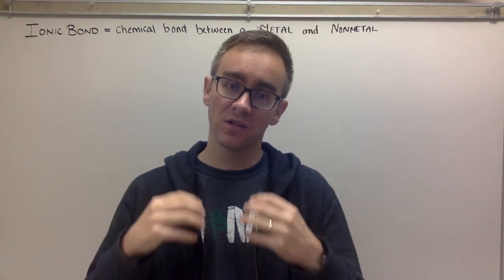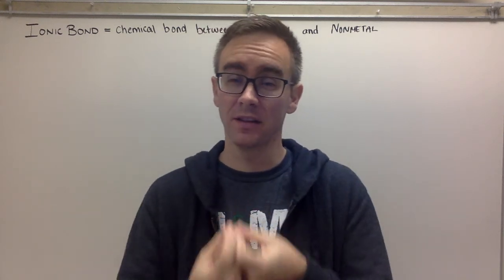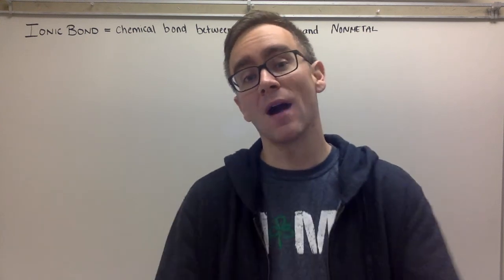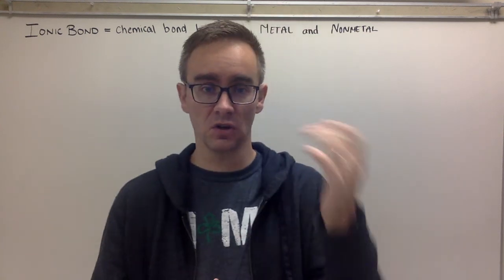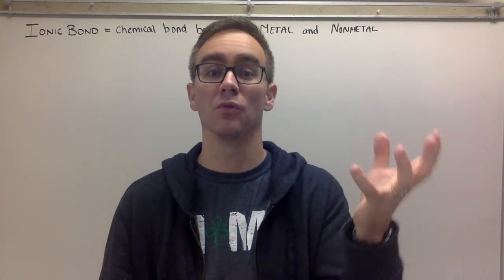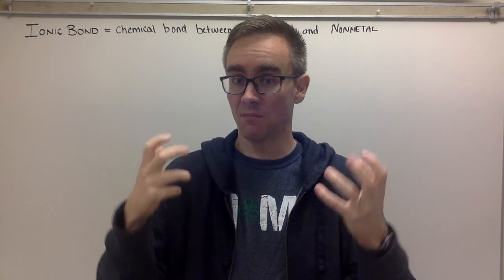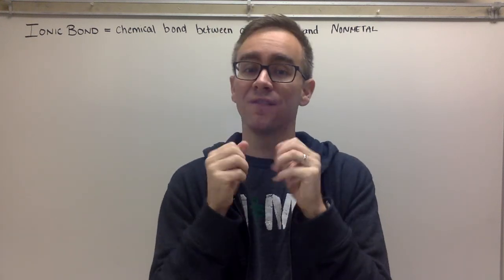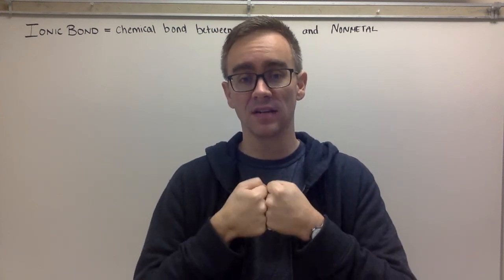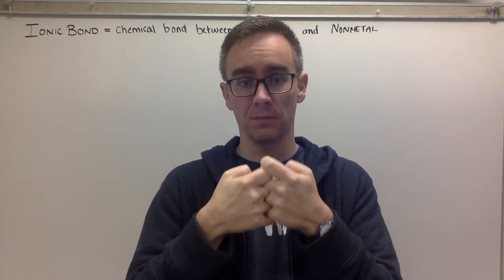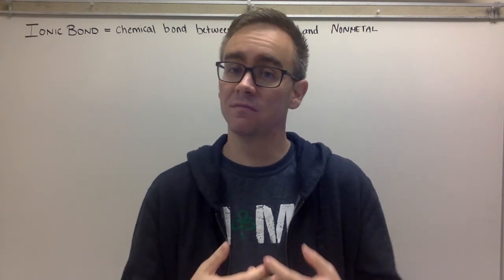When atoms and elements work together to form that chemical bond — that relationship — their properties change. The classic example is if you take sodium, which is a kind of an explosive metal, and you take chlorine, which is a poisonous gas, you combine them together and they form a chemical bond. They come together — no longer separate but together — and they form sodium chloride, which is table salt.